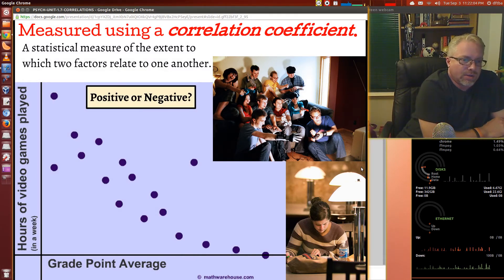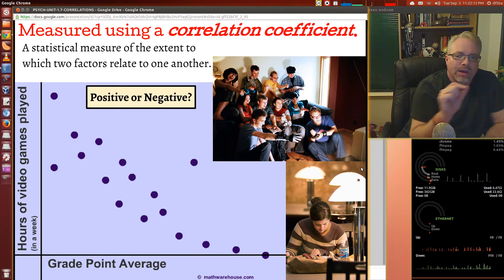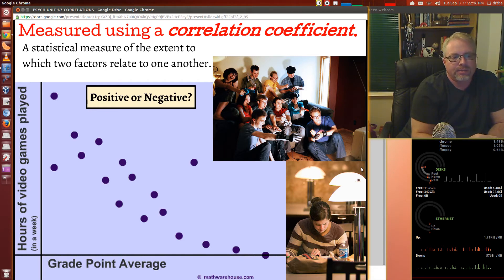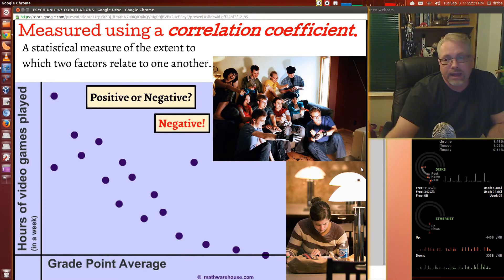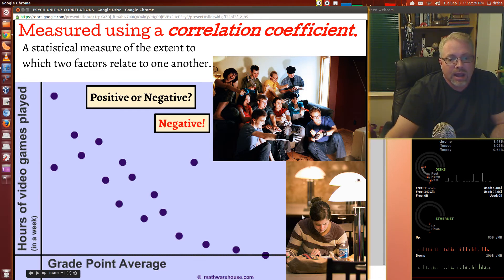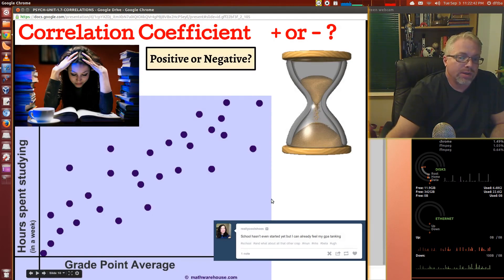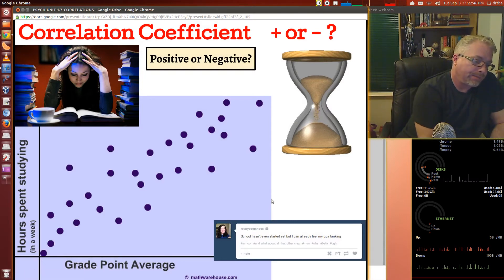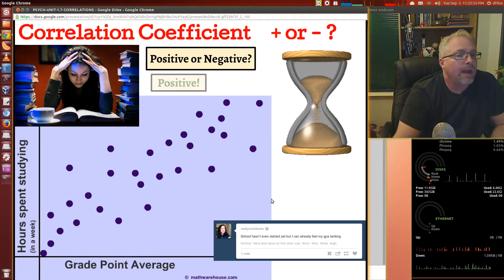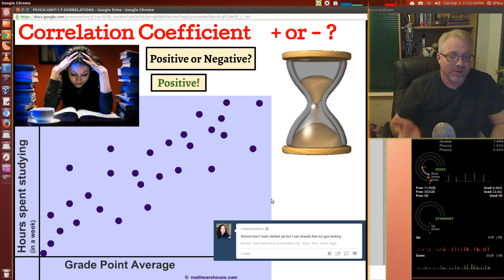Measured using correlation coefficient, a statistical measure to the extent to which two factors relate to one another. The hours of video games played and the grade point average at the bottom. What can you say about this? Is it positive or is it negative? Well, it's negative. And that makes some common sense. The more you're playing video games, the less time they're studying. The grade point average goes down. Sorry guys. Here's a correlation coefficient. Hours spent studying in a week and the grade point average. Positive or negative. What do you think that it is? It's definitely positive. If you're going to spend more time studying, you probably will do well grade point average wise.